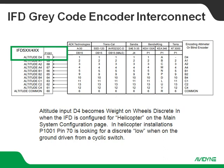Altitude line D4, which equates to the P1001 connector on the IFD at pin 70 — if this is installed in a helicopter, that line is reserved for a weight-on-wheels input. Typically that would be looking for a line coming from the cyclic. If you're configured as a helicopter, it changes the function of that input pin and it's no longer looking for gray code altitude data; it's looking for a squat switch input coming from a cyclic switch.